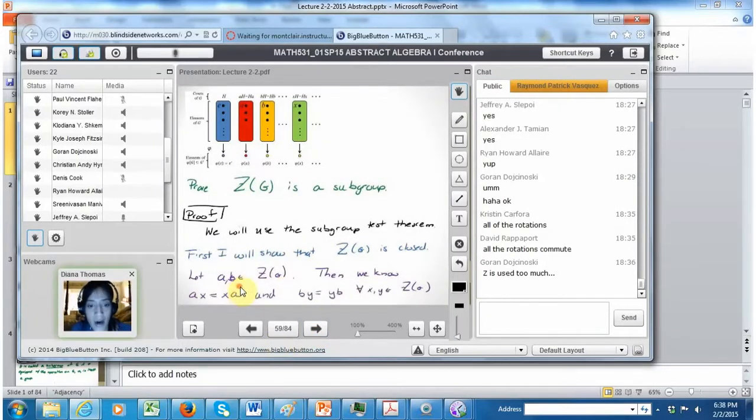I have to take an arbitrary A and B in G. The criteria to be in Z is that it has to commute with all the other elements. So what do we know from that property that A and B in G are in this Z? I know that A commutes with every other element and B commutes with every other element in this subset Z.